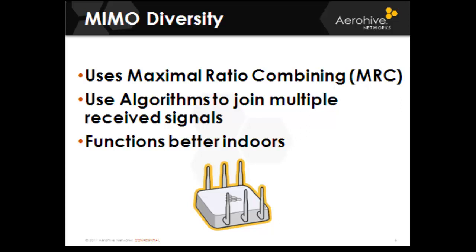MIMO diversity uses maximal ratio combining, which uses algorithms to join multiple received signals, and it functions much better indoors than outdoors. Indoors, there are more reflections that MIMO diversity can use to determine the different signal streams and create upfade. Outdoors, there are not as many surfaces to reflect off of, so there are fewer reflections for MIMO to use to improve signal strength.